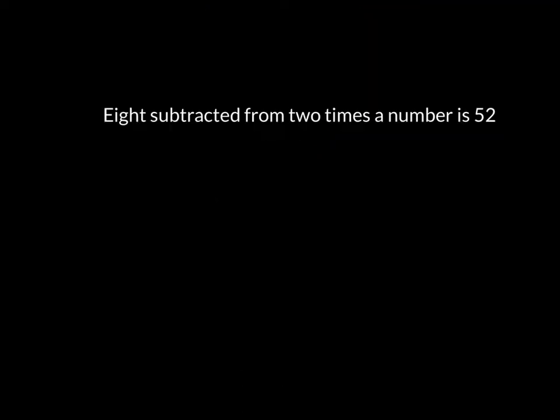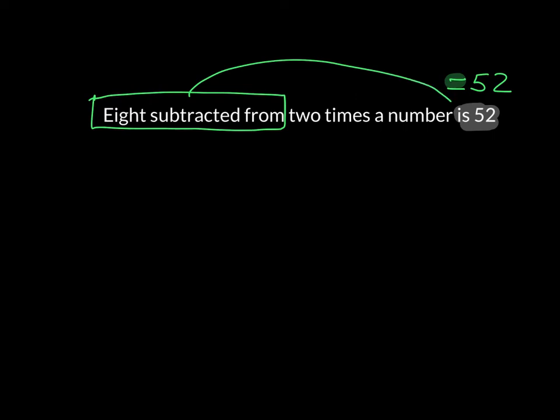We're going to do the same thing here. We're going to start with the equals piece because I always think that's important. So this is equal to 52. Now, the next part says '8 is subtracted from'. That means it goes behind the next value. And '2 times the number', we've talked about that before, this just means 2x. So to put this in order, it is 2x minus 8 is equal to 52.